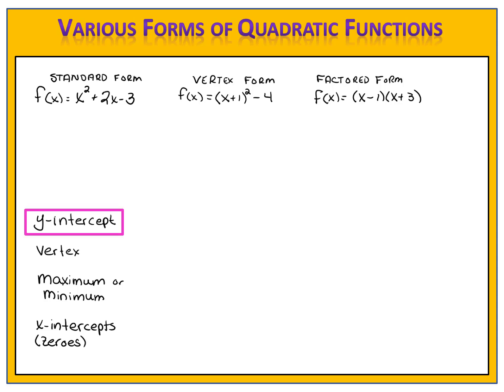Let's start with the y-intercept. Which form would you choose? If you said standard form, that's the best choice, because the y-intercept is the constant term. So whenever you're looking for the y-intercept, although you can find it in any form, the standard form is the easiest way to go. In this particular function, we can see that the y-intercept is negative 3.